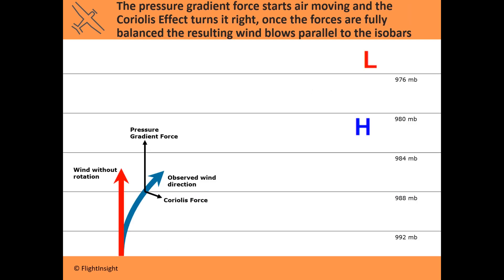What it boils down to is that you have two forces causing the wind to blow. You have an initiating force — the pressure gradient force — that starts the air moving from high to low, and we can think of that as moving perpendicular to isobars. You see the five isobars spaced as horizontal lines, and that red arrow moving perpendicular to them — that's the initiating force, not yet affected by Coriolis. The Coriolis effect then deflects it to the right, shown by that blue arrow.